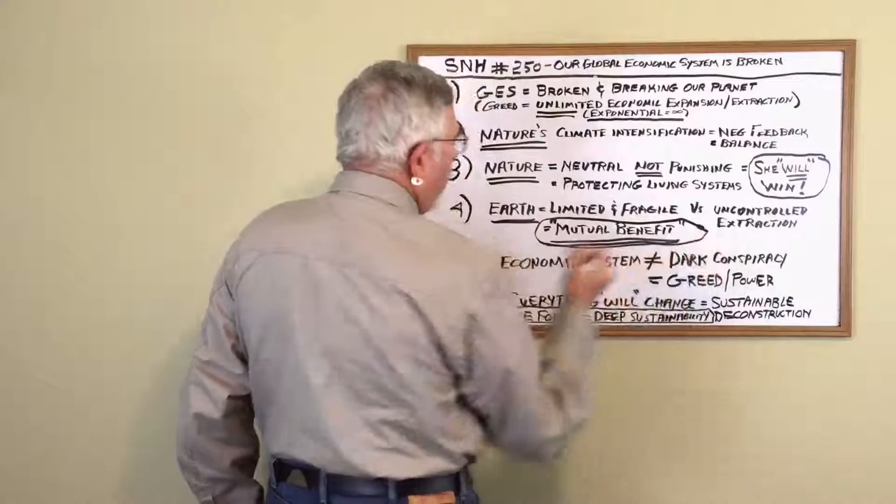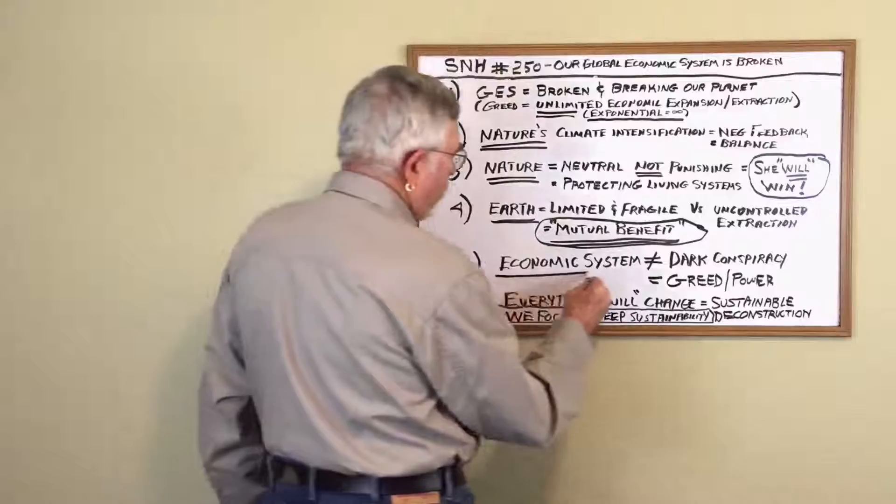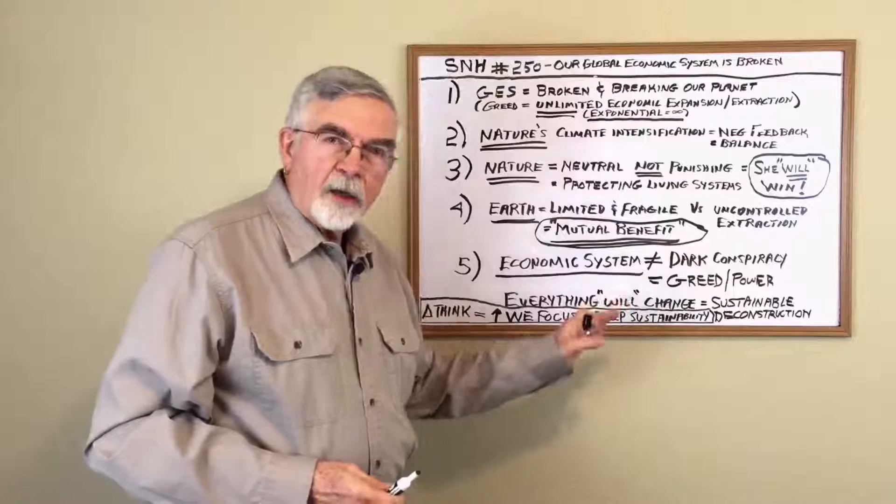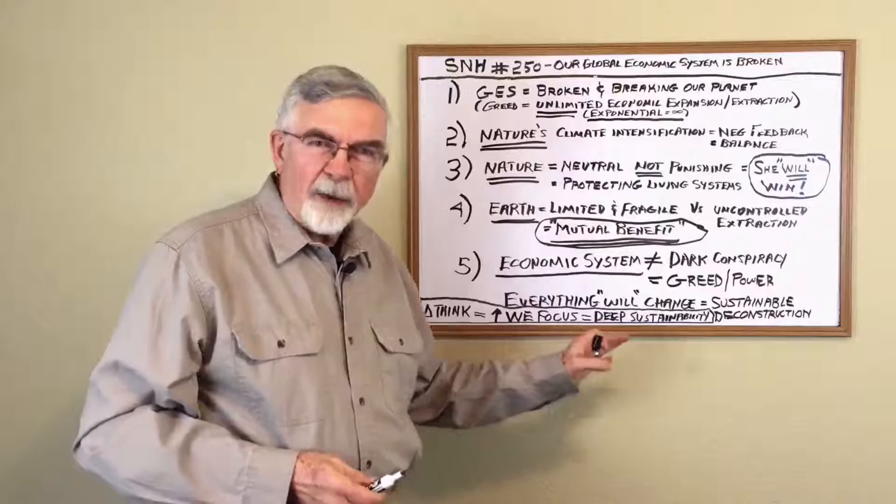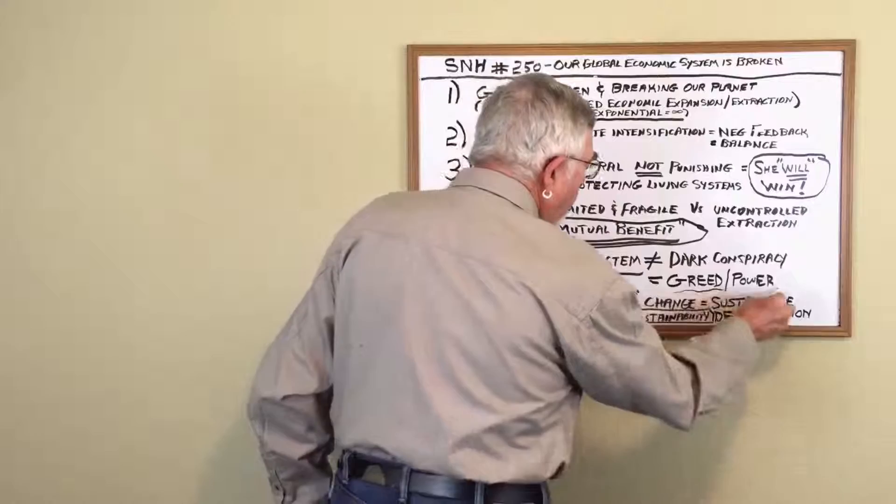Now, why am I pointing that out? Well, our economic system, and this is point number five, it's broken. But it's not a dark conspiracy like a lot of people are beginning to talk about. It's not a conspiracy. It's really simple. It's unchecked greed and power. That's all it is.